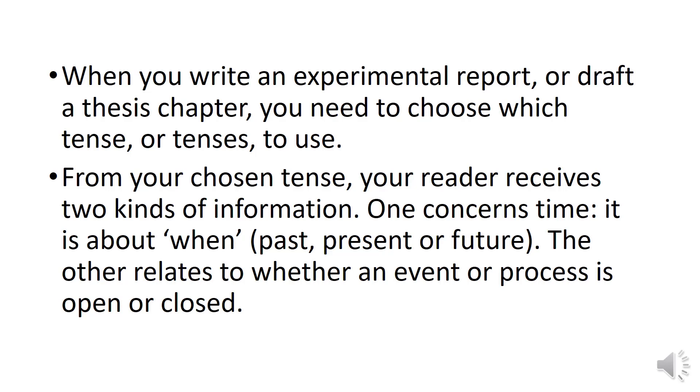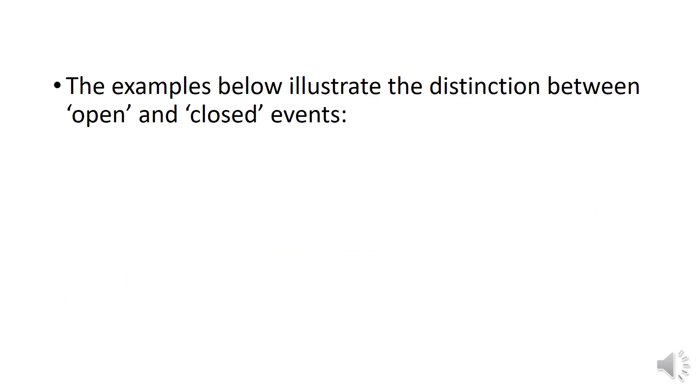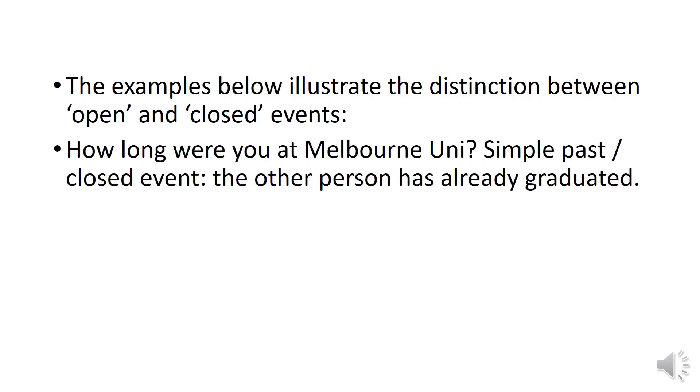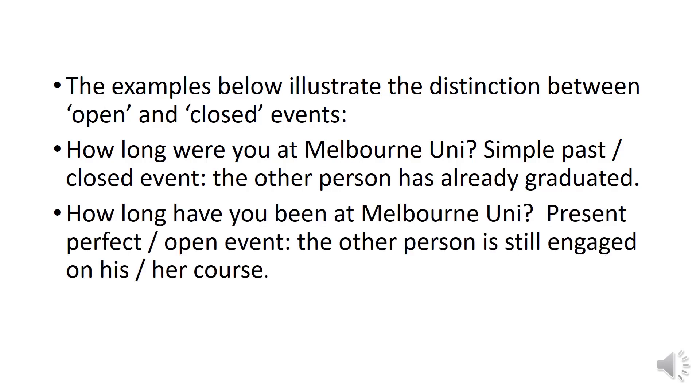The examples below illustrate the distinction between open and closed events. How long were you at Melbourne Uni? Simple past, closed event - the other person has already graduated. How long have you been at Melbourne Uni? Present perfect or open event - the person is still engaged on his or her course.